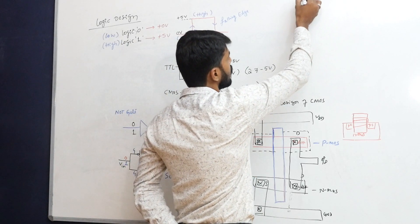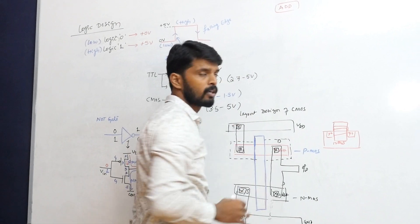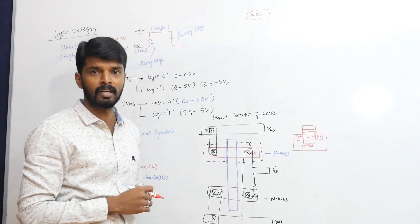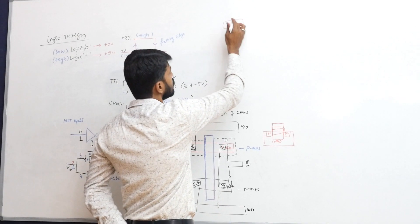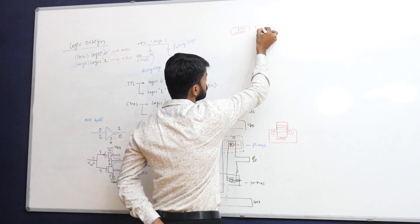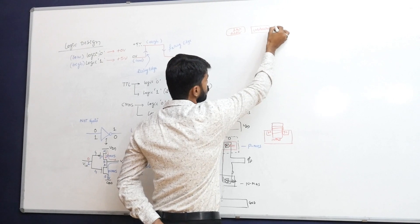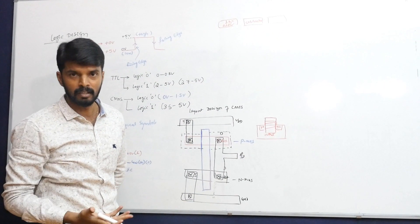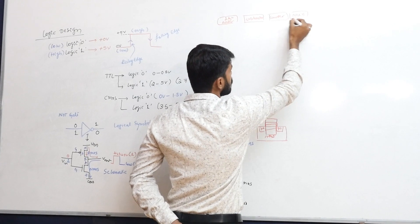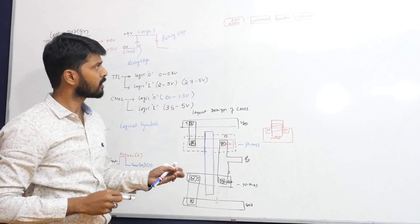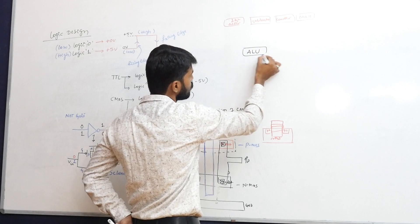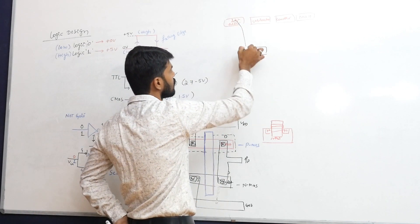For example, we all know that to design an adder we use logic gates. We will study the structure of a one-bit adder, and we will also learn the subtractor design and in future semesters, counters and ALU design. All these combinational and sequential circuits come together in an Arithmetic and Logic Unit (ALU).